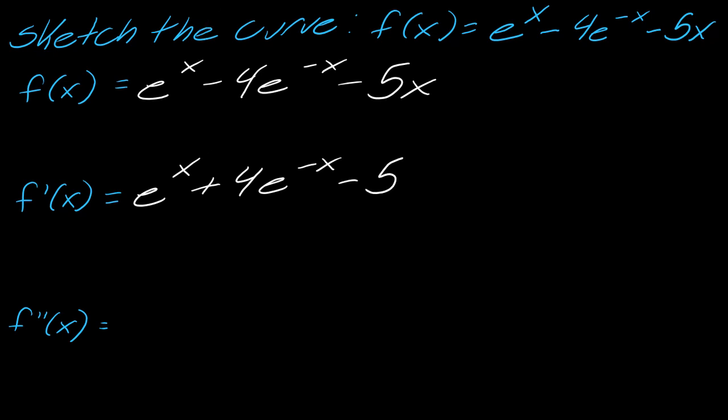And then let's go ahead and take the second derivative as well, just to get it out of the way. If I take the second derivative, this will be e to the x minus 4e to the negative x, and then that minus 5 drops out.